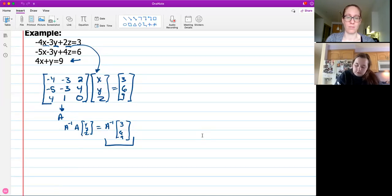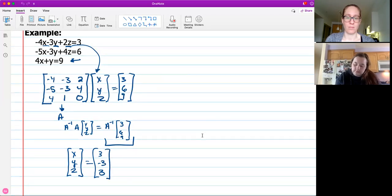And that will make multiplying this section a lot easier. And then once you do that, you end up with x, y, and z over here. And three, negative three, three as your solution. So your solution would be three, negative three, and three. Just like that.